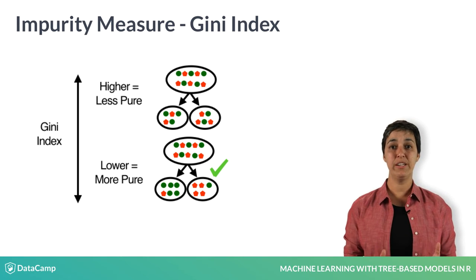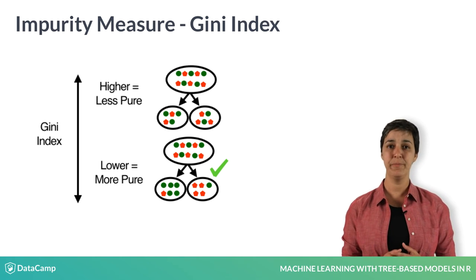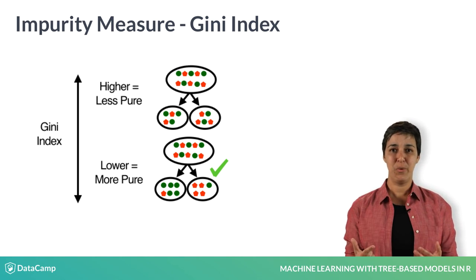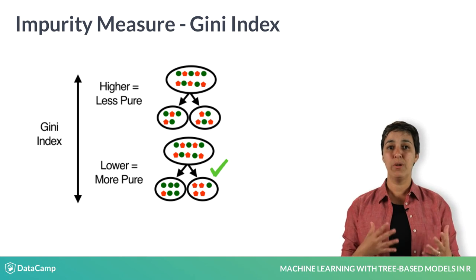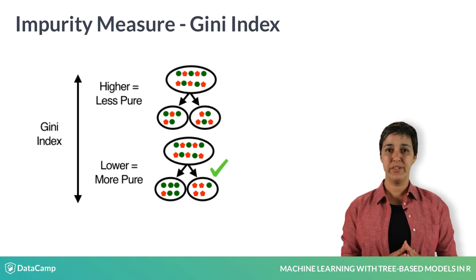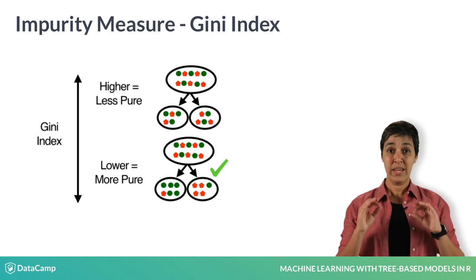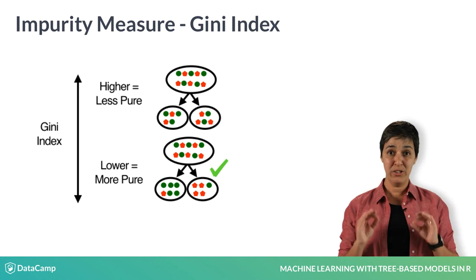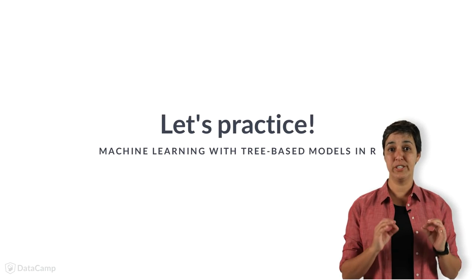Besides the Gini index, other impurity measures include entropy or information gain, and misclassification rate. We are not going to cover how to calculate each of these in this course. All you need to know is that each one measures how mixed the partitions are.